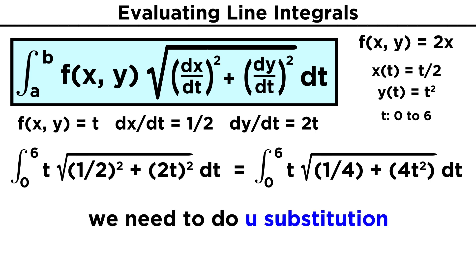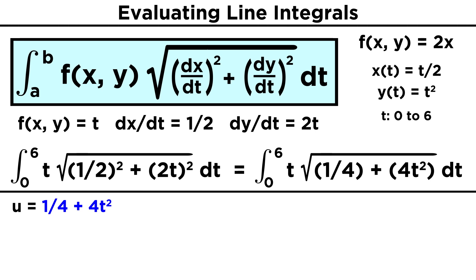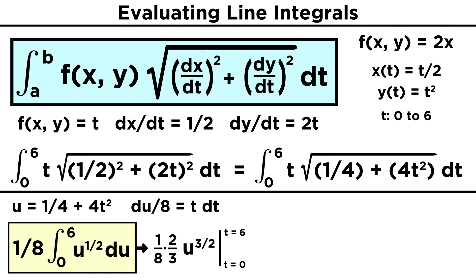To solve this, we must use substitution, letting u equal one fourth plus four t squared, which when we differentiate both sides gives du equals eight t dt. We have t dt in the expression, so let's change that to du over eight. And now we can write the line integral strictly in terms of u, which gives us one eighth times the integral of root u du. This is simple to integrate if we think of the root as an exponent and equal to one half. We will get one eighth times two thirds u to the three halves, evaluated from the lower bound of zero to the upper bound of six.